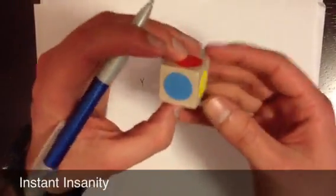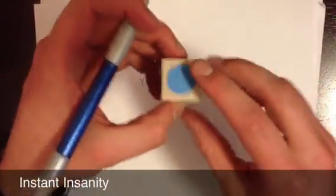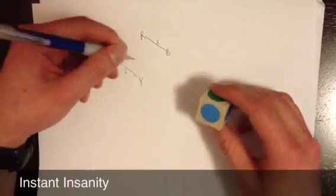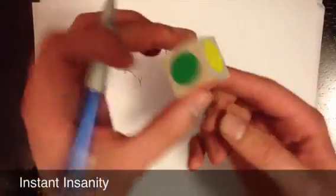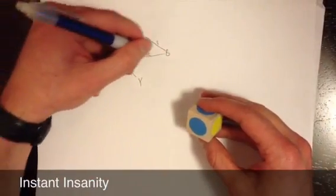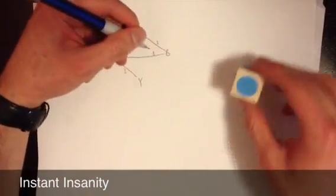So, we find the other pairs. We've got green and yellow. So, here we are. We'll label that one. And we also have blue and green. So, one.